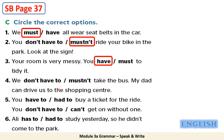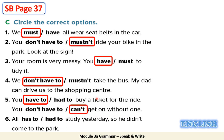Four: we don't have to take the bus — my dad can drive us to the shopping center. Five: you have to buy a ticket for the ride. You can't get on without one.